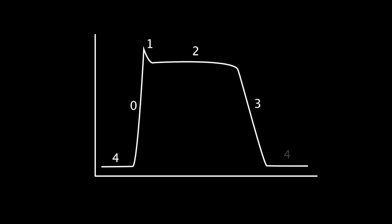When any of these phases are disrupted, it can cause an irregular heartbeat. Class 1 antiarrhythmics are also known as sodium channel blockers. They work on phase 0. Let's see how.